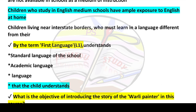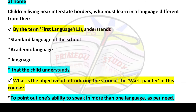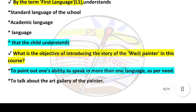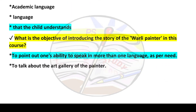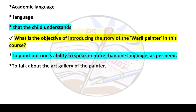Next question: By the term 'first language' (L1), understand that — the child uses it as their primary language. Next question: What is the objective of introducing the story of 'a worldly painter' in this course? Answer is option number one: to point out one's ability to speak in more than one language as per need.